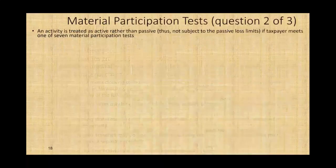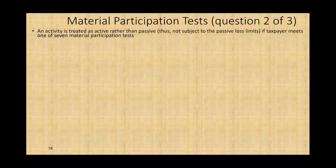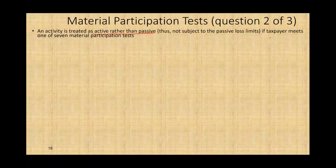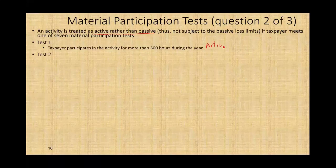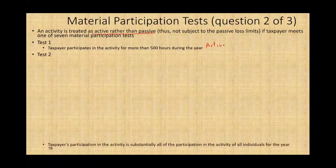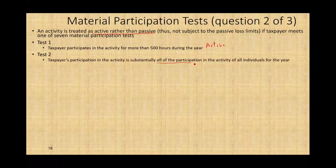The second question we have to answer is: what constitutes material participation? An activity is treated as active rather than passive — not subject to the passive activity loss rules — if the taxpayer meets one of seven material participation tests. Test one: the taxpayer participated in the activity more than 500 hours. If yes, the activity is active. Test two: the taxpayer's participation in the activity is substantially all the participation of all individuals for the year — basically the taxpayer is running the business from A to Z.